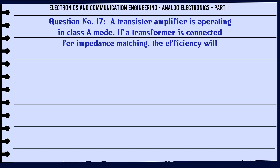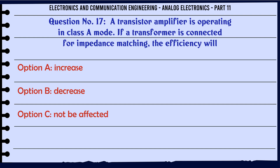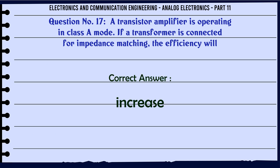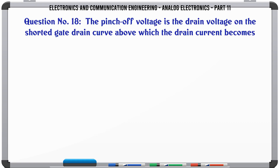A transistor amplifier is operating in class A mode. If a transformer is connected for impedance matching, the efficiency will. A. Increase. B. Decrease. C. Not be affected. D. Increase or decrease. The correct answer is: Increase.